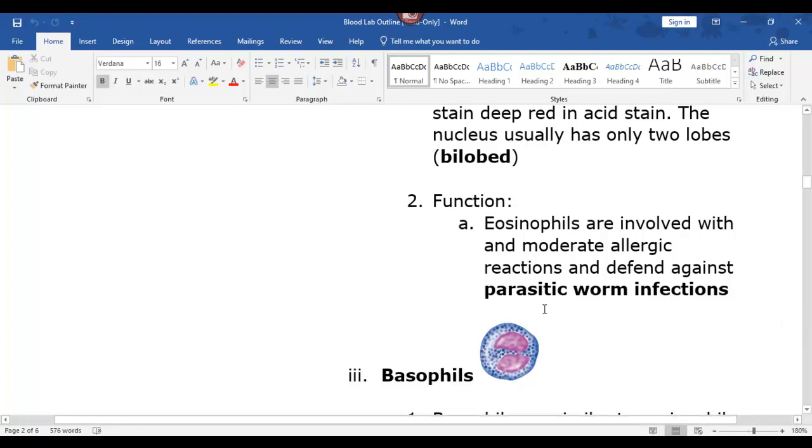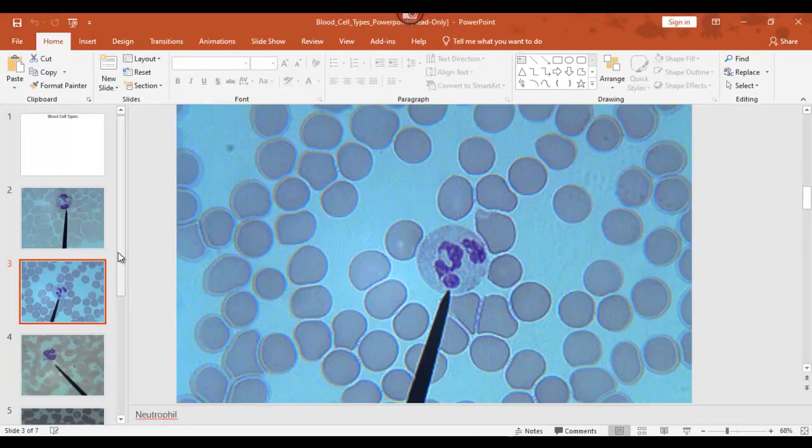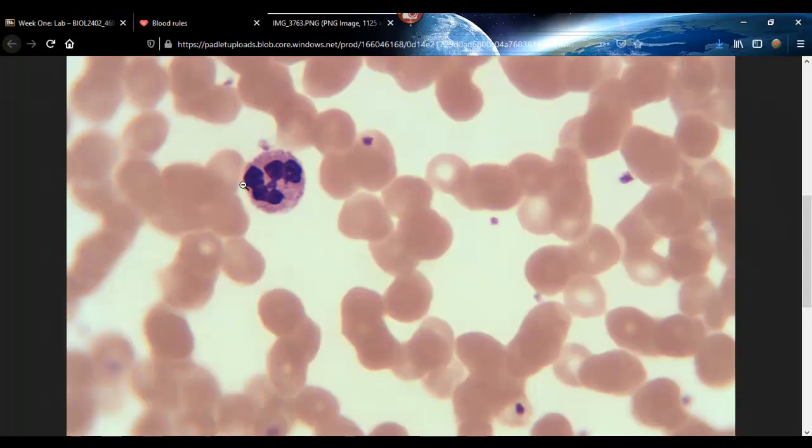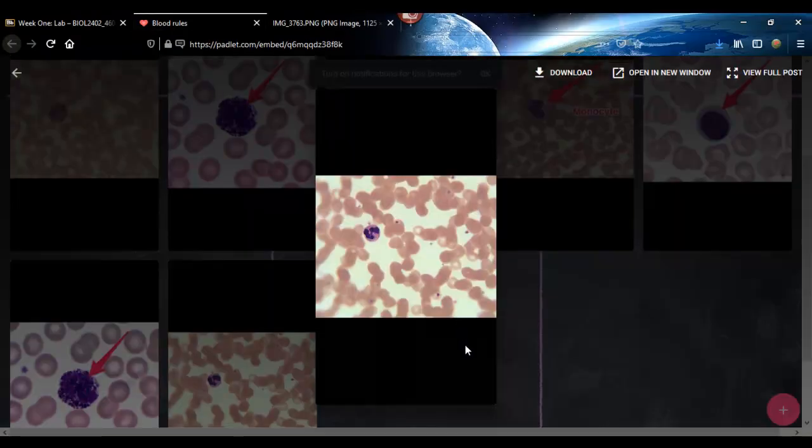So like it says there, defend against parasitic worm infections and moderate allergic reactions—that's what they do. Now this is one of the pictures I'm not that proud of because the person—this poor guy's sunglasses are broken. This is actually an eosinophil. See the two big lobes and it would have gone across, it's broken there, but the color is not great, but that's an eosinophil.